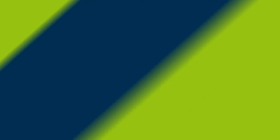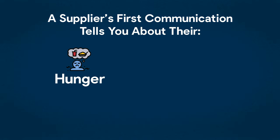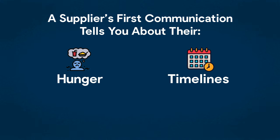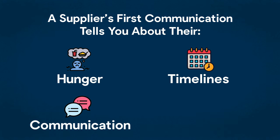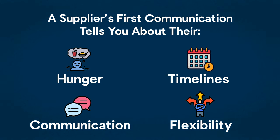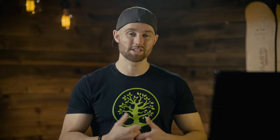Step five is to vet initial responses. One of the most critical points is when the supplier responds to you for the first time, because of four things: number one, how hungry they are for your business — the faster they respond, the better; number two, how quickly they're likely to respond in the future; number three, how easy it is to understand their communication and how well they understood yours; and number four, how flexible they are with your ideas. If some didn't respond at all or responded days later without a viable reason, move on. Find three suppliers who responded quickly — within 24 to 48 hours — are flexible, hungry for your business, and keen to help you build your envisioned product.